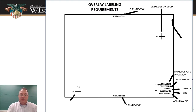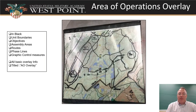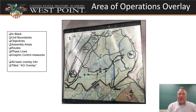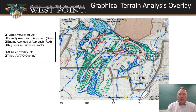The area of operations overlay specifically — that whole thing is in black. You should be showing unit boundaries, objectives, assembly areas, routes, phase lines, and any other graphic control measures on the AO overlay. Those go only on that one, not on other overlays. You also need all the basic overlay info, and the title on this one needs to say 'AO overlay.'